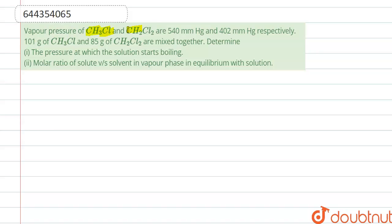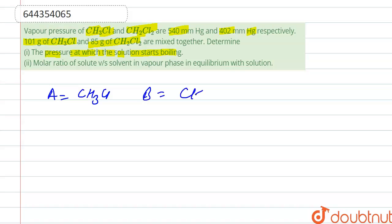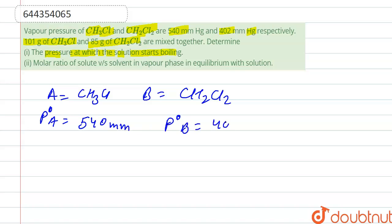The vapor pressures of CH₃Cl and CH₂Cl₂ are 540 mmHg and 402 mmHg respectively. 101 grams of CH₃Cl and 85 grams of CH₂Cl₂ are mixed together. Determine first the pressure at which the solution starts boiling. Let's consider A = CH₃Cl and B = CH₂Cl₂, so P⁰A = 540 mmHg and P⁰B = 402 mmHg.